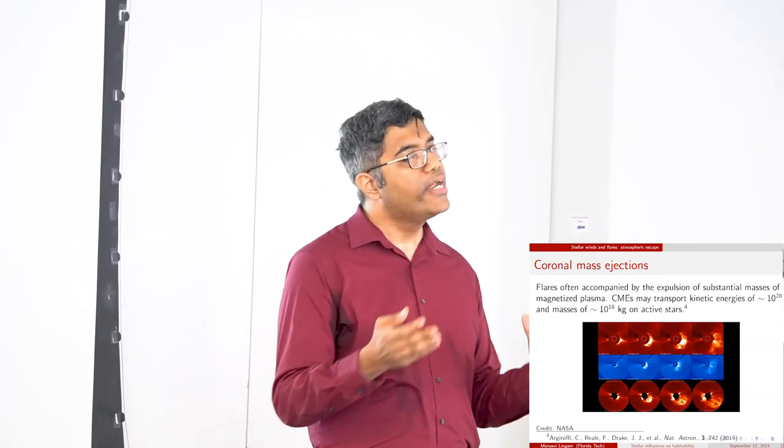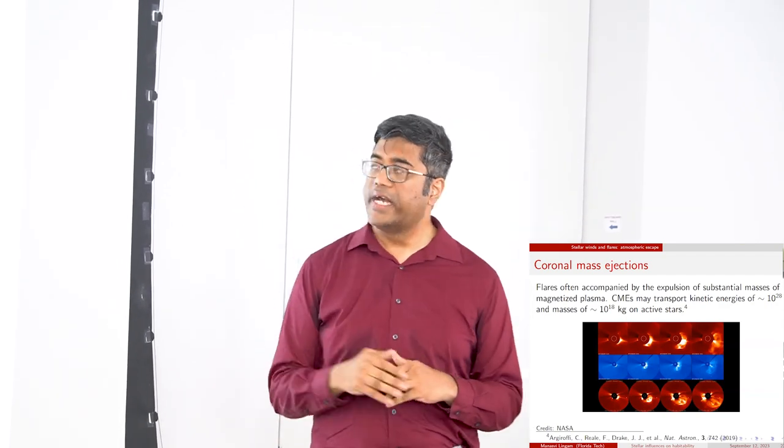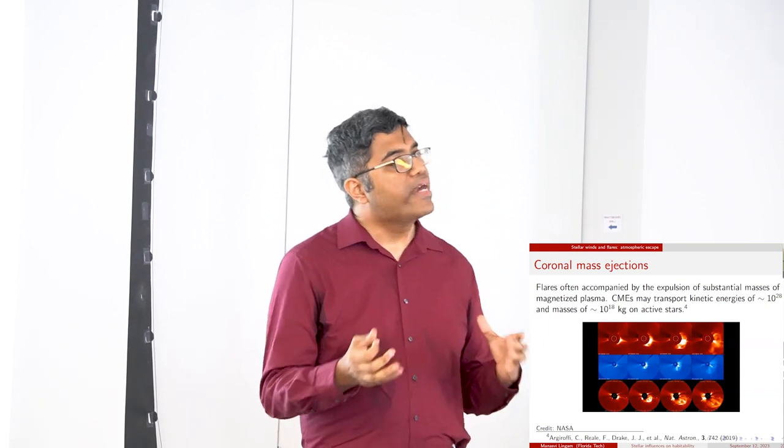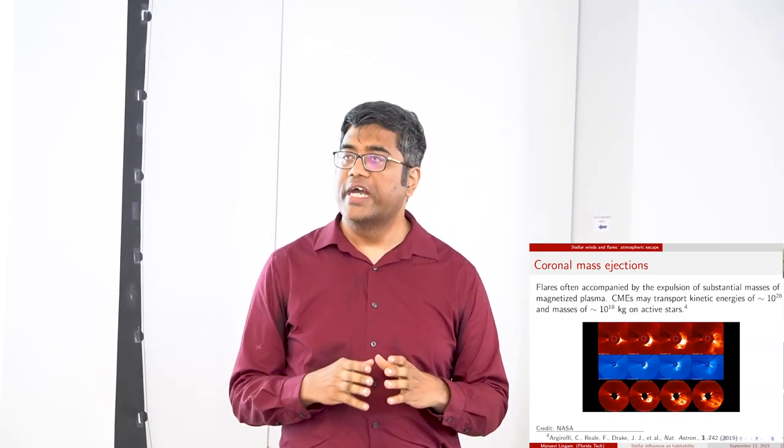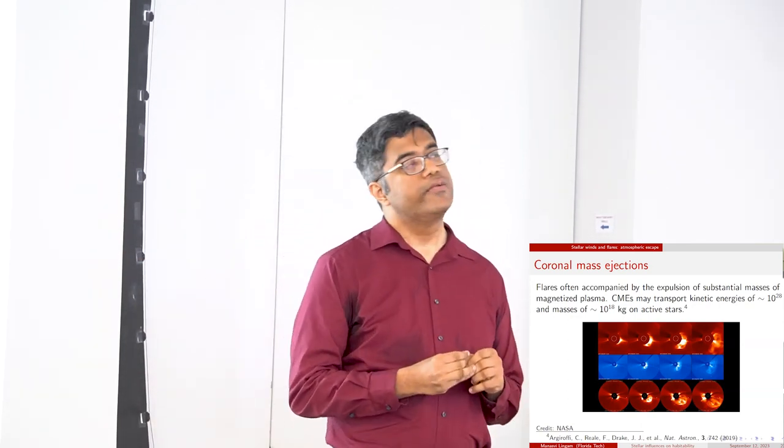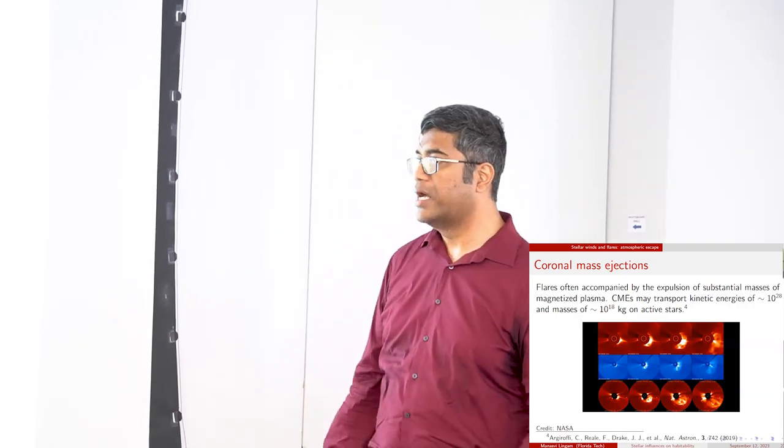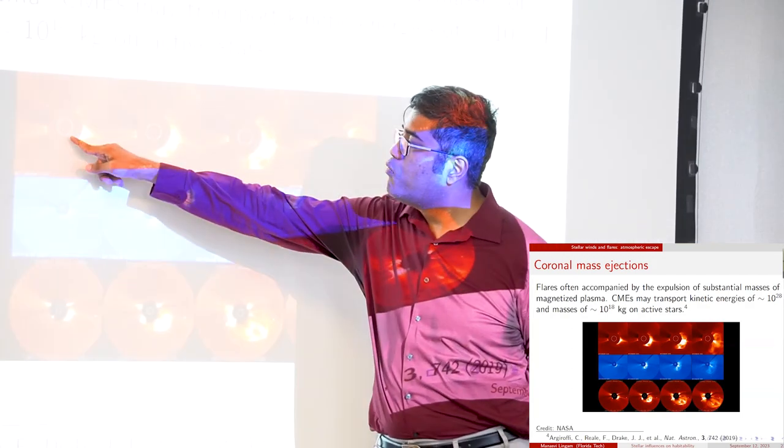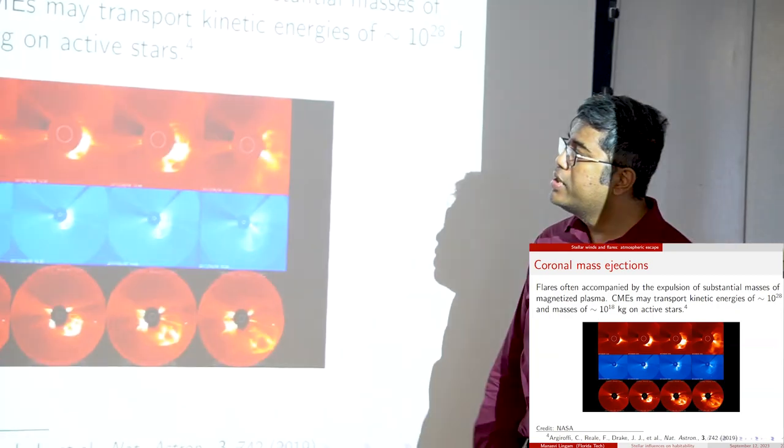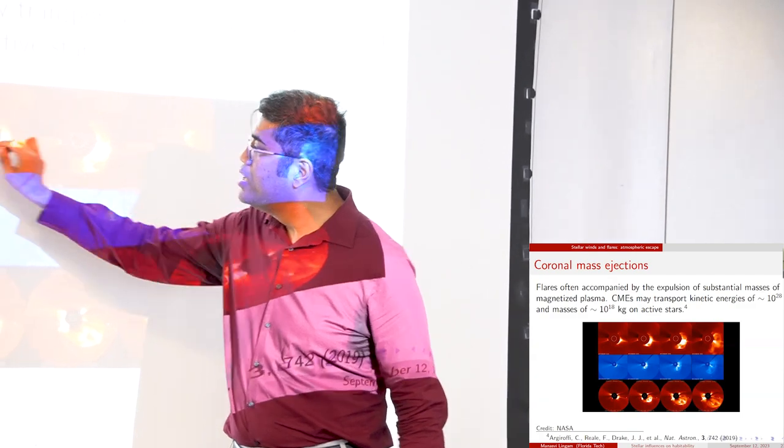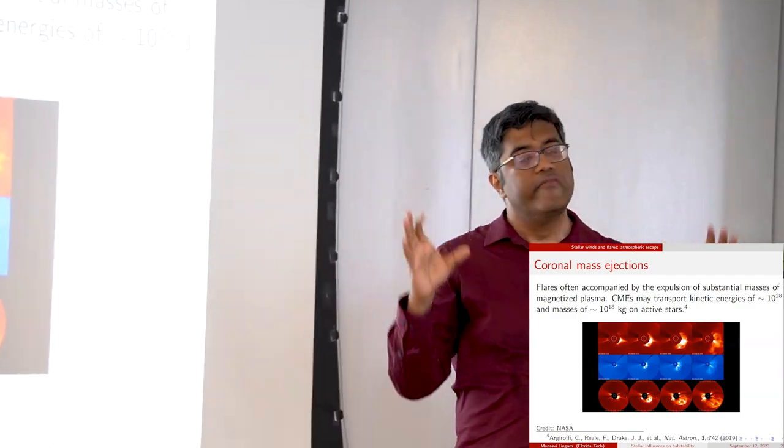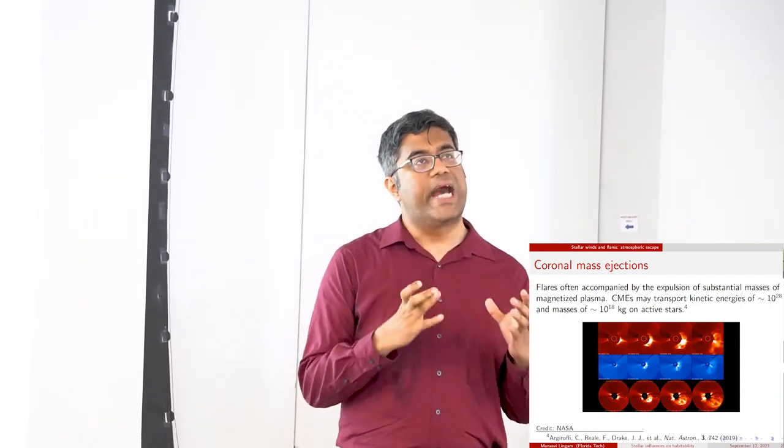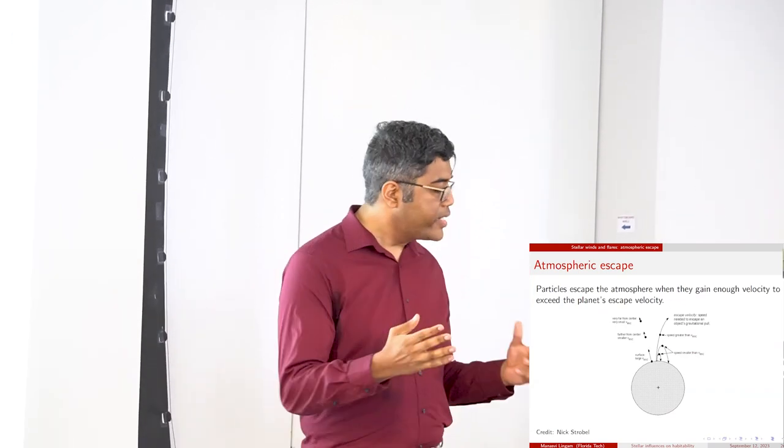One more phenomenon closely related to flares, especially to large flares, are coronal mass ejections. CMEs, as they are known, are essentially big blobs of plasma with an embedded magnetic field which are expelled from the stars. In the case of active stars, they can transport a lot of mass and a lot of energy along with them. They can transport kinetic energy of up to 10^32 ergs in joules and masses of 10^18 grams. In this particular slide, the star is shown by this white ring, and the coronal mass ejection is shown by the bright yellow region. As it moves through space, it expands as well. We see the size of this bright colored region becoming larger.